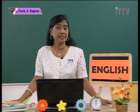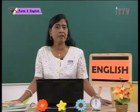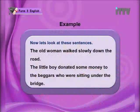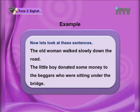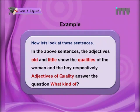Now we are going to look at sentences where these adjectives are used, so pay attention and follow carefully. The old woman walked slowly down the road. The little boy donated some money to the beggars who were sitting under the bridge. In the above sentences, the adjectives 'old' and 'little' show the qualities of the woman and the boy respectively.